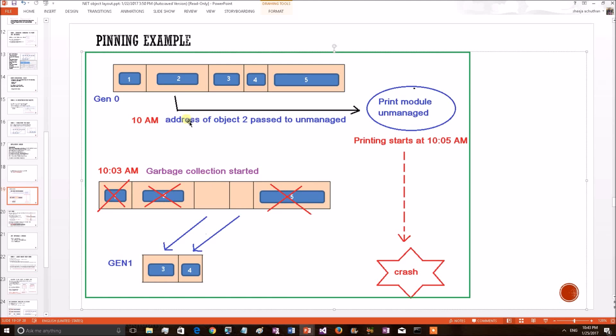Garbage collector does not know the object 2 has been passed to the print module because garbage collector has no idea what is happening on the unmanaged section. It is purely a managed operation.